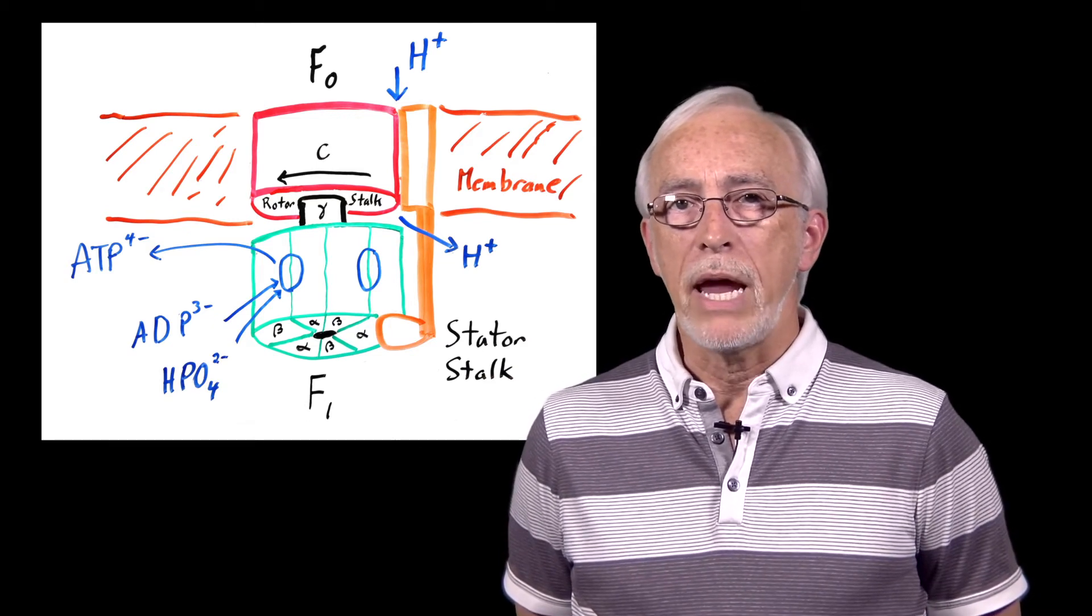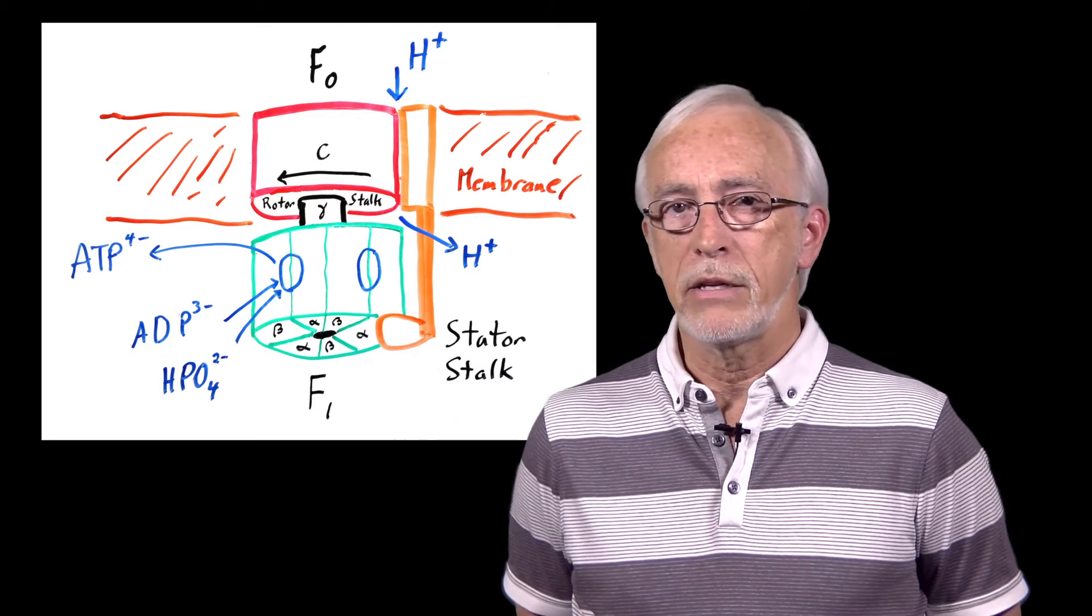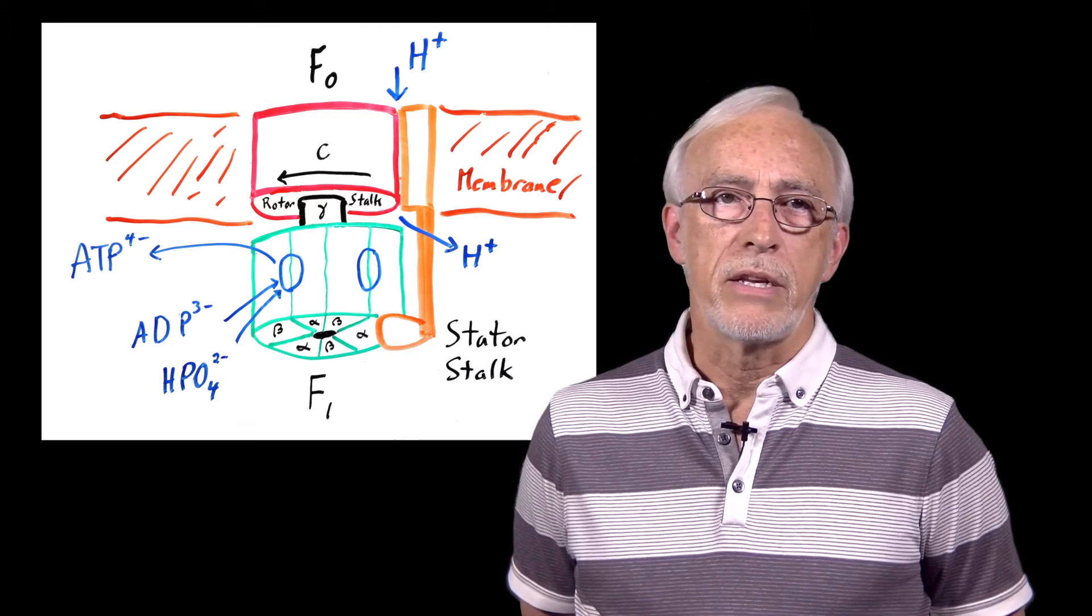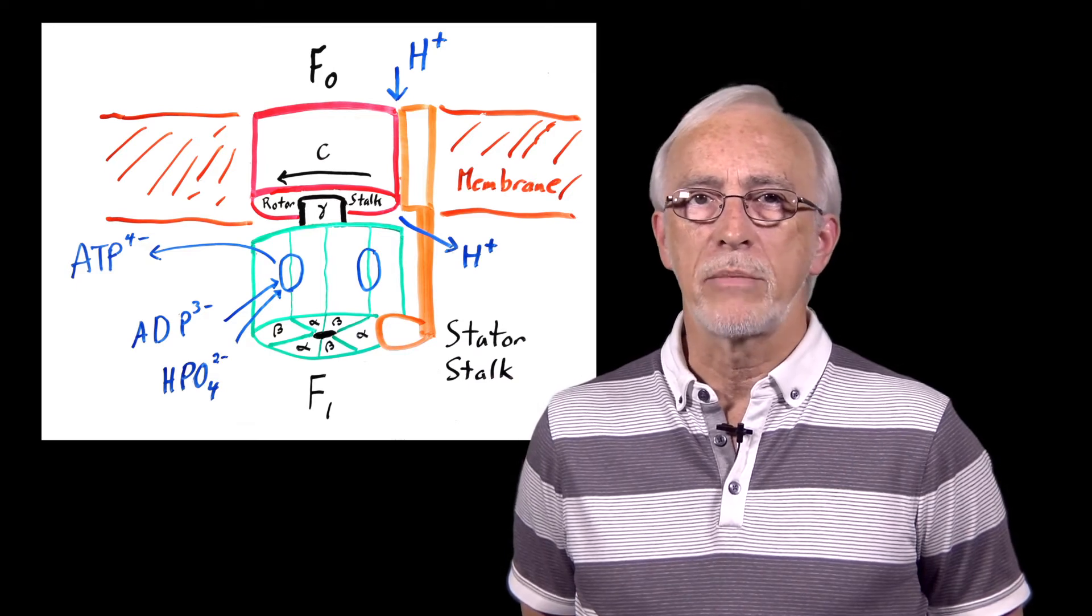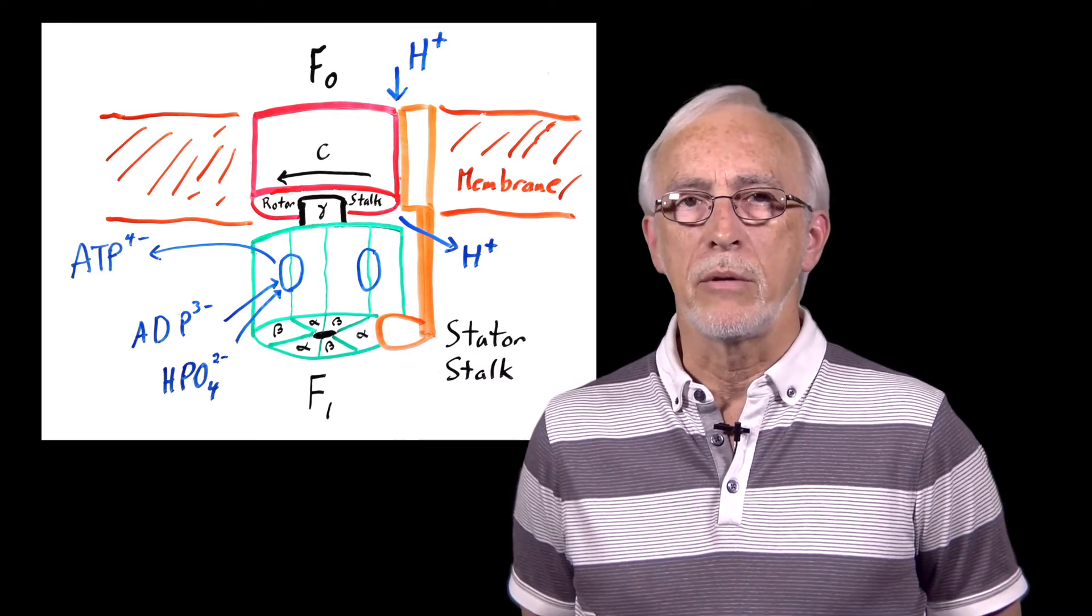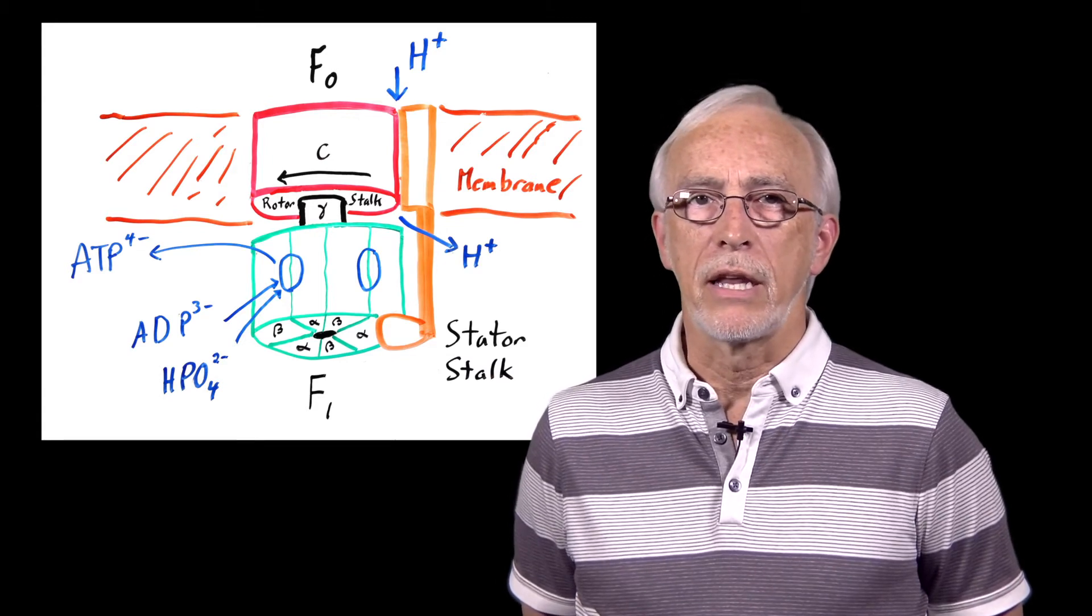In the open form, ADP and phosphate are attracted, enter, and stick. Since the ADP and phosphate contain negatively charged oxygen atoms, they are held in place by positively charged sites on the protein, in particular, arginine and lysine amino acid side chains, which have a positively charged nitrogen containing groups. Intermolecular forces like these control the movement and position of atoms throughout the process that leads to ATP formation.